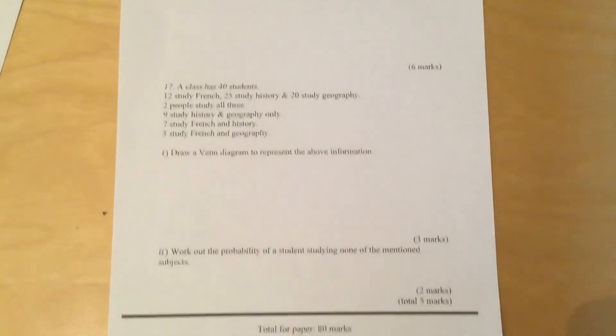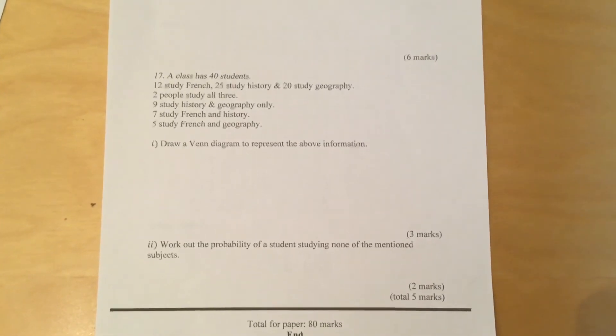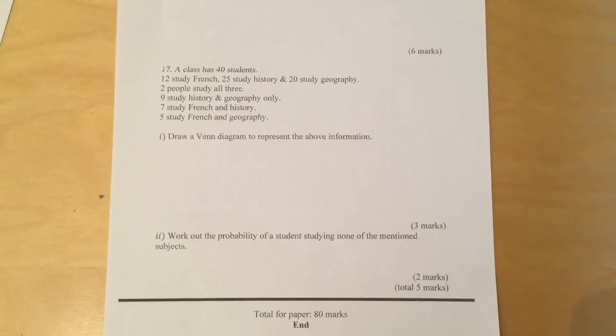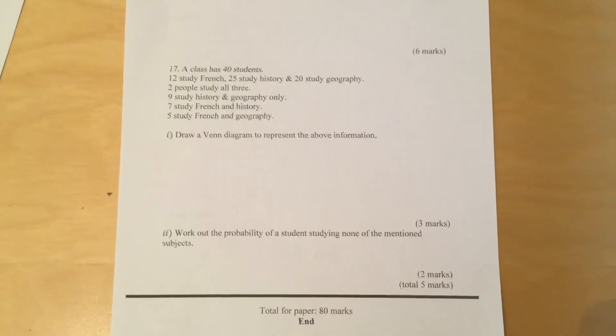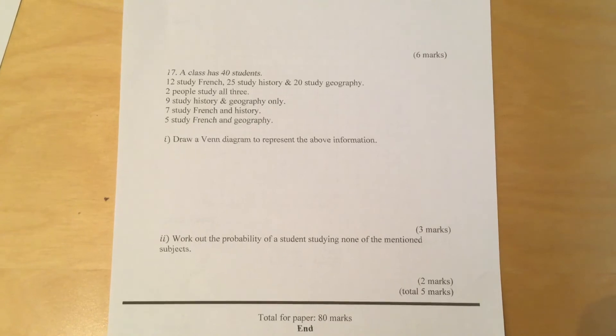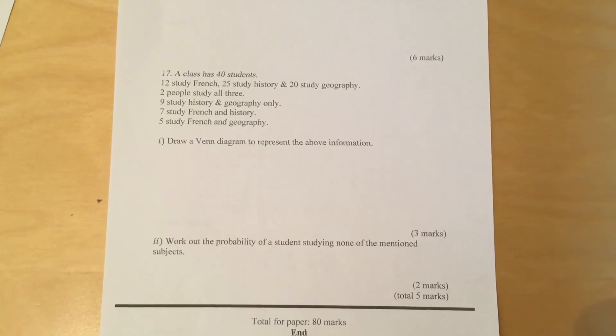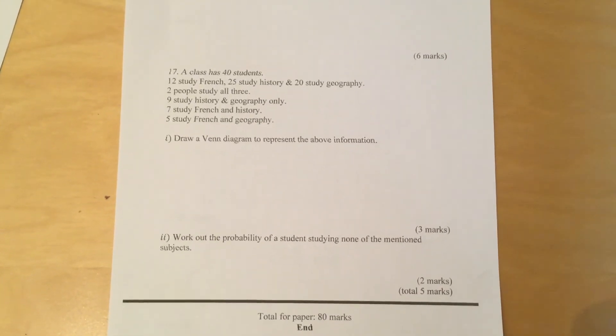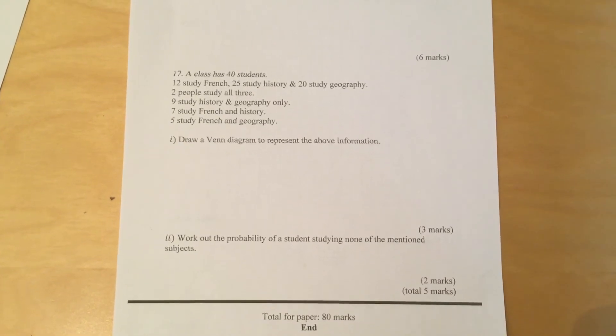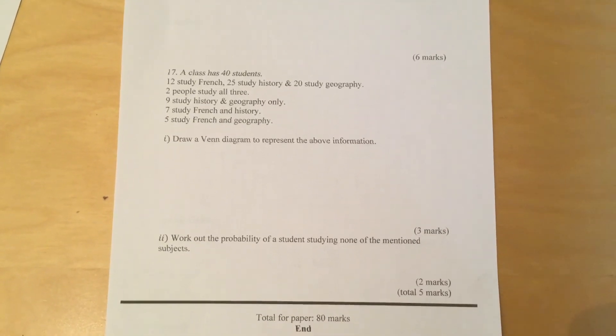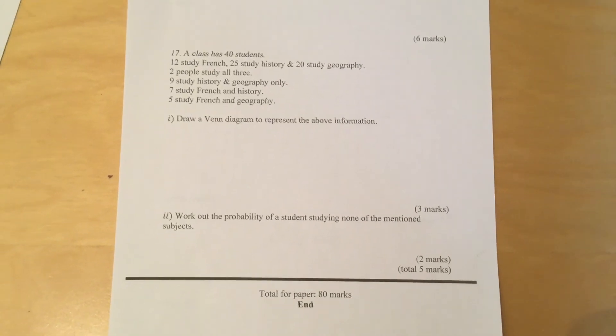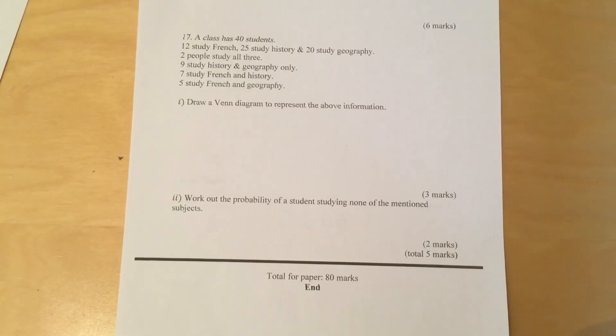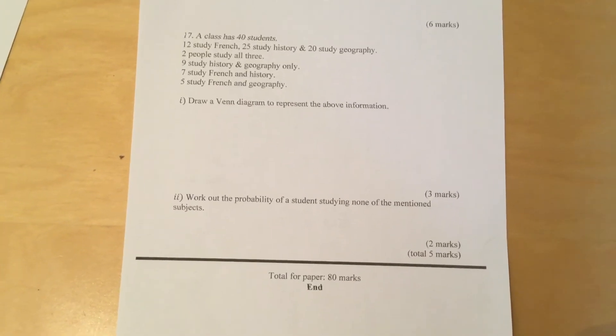Question 17. A class has 40 students. 12 study French, 25 study History, and 20 study Geography. Two people study all three, 9 study History and Geography only, 7 study French and History, and 5 study French and Geography. Part 1. Draw a Venn diagram to represent the above information. Part 2. Work out the probability of a student studying none of the mentioned subjects.